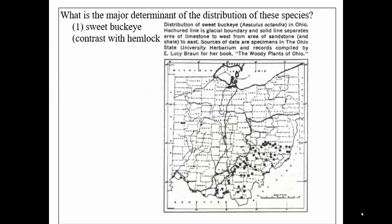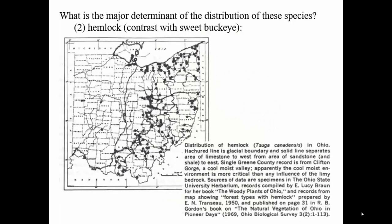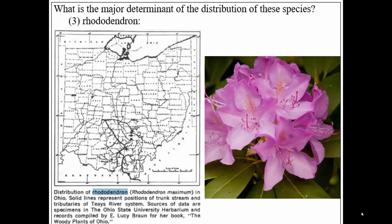Some species have distributions determined not exactly by substrate but by geologic history. Sweet buckeye is only found south of the glacial border, whereas Ohio buckeye is more widely distributed, including north of the glacial border, and it probably wasn't able to disperse after the glaciers left. Hemlock, on the other hand, occurs both north and south of the glacial border, suggesting its distribution is more related to site conditions — cool ravines, north-facing, that retain boreal conditions.